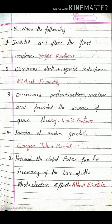Now second exercise B: Name the following. First: invented and flew the first airplane. Answer is Wright Brothers. Second: discovered electromagnetic induction. Answer is Michael Faraday. Third: discovered pasteurization, founded vaccines, and founded the science of germ theory. Answer is Louis Pasteur. Next: founder of modern genetics. Answer is Gregor John Mendel.